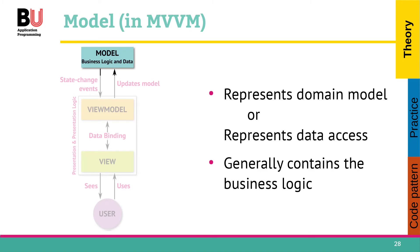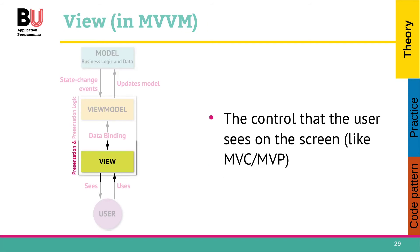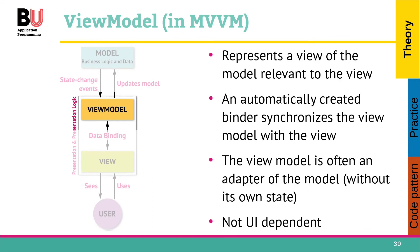A model, in this case, can again represent either the domain model or just access to the data. The model might change its state and that basically informs the view model. The view displays everything on the screen. The view model basically synchronizes your stuff — it says, okay, here's the model, update this or something like that. It can be fairly simple, just exposing this model, this data.